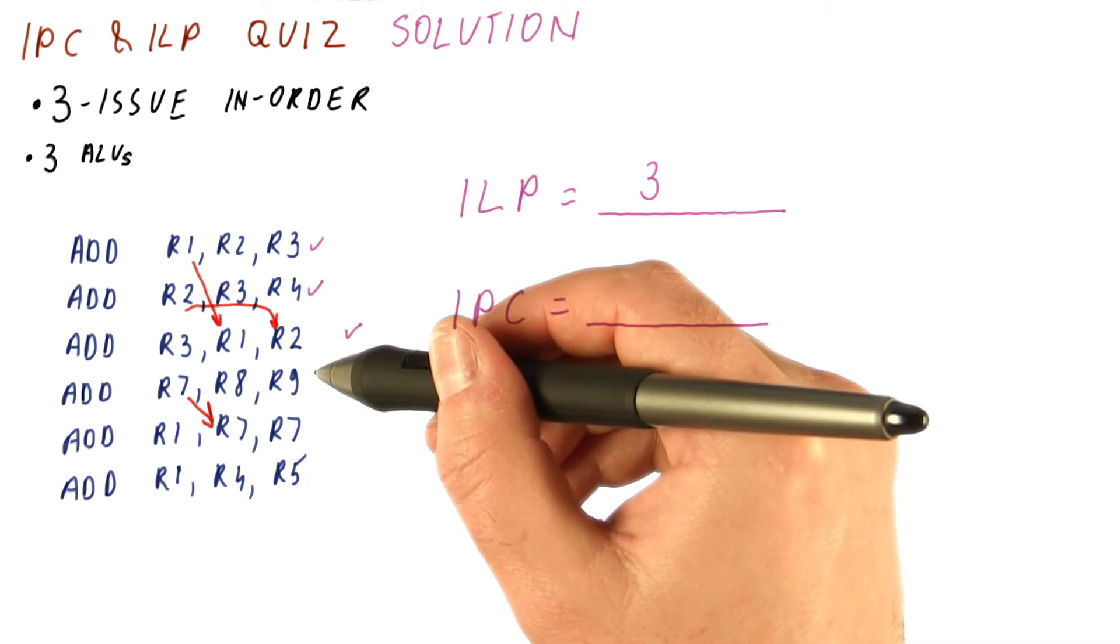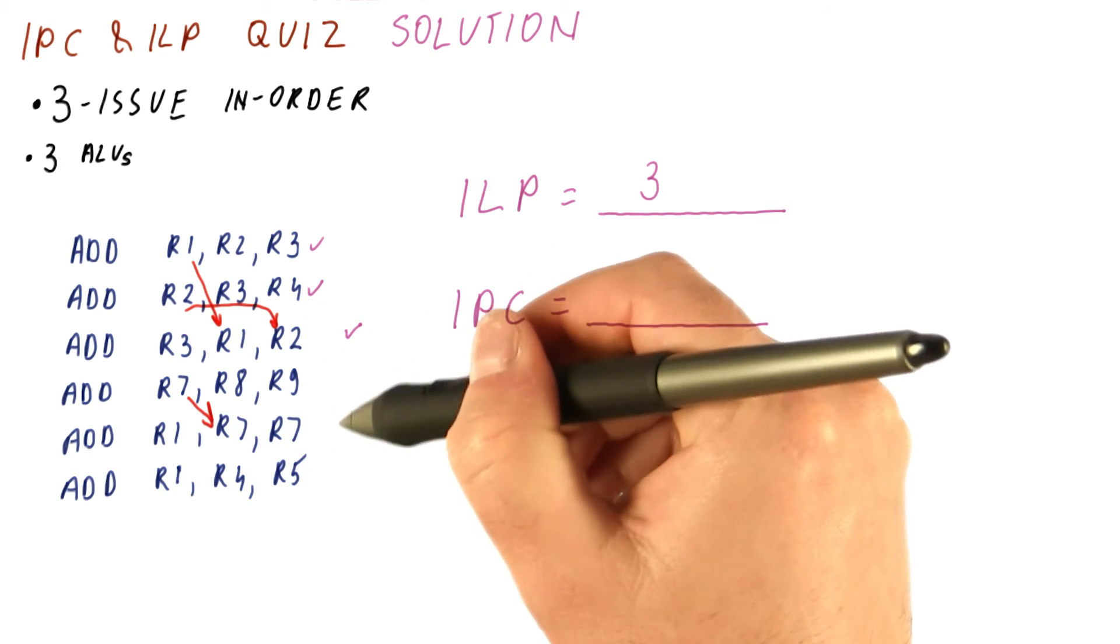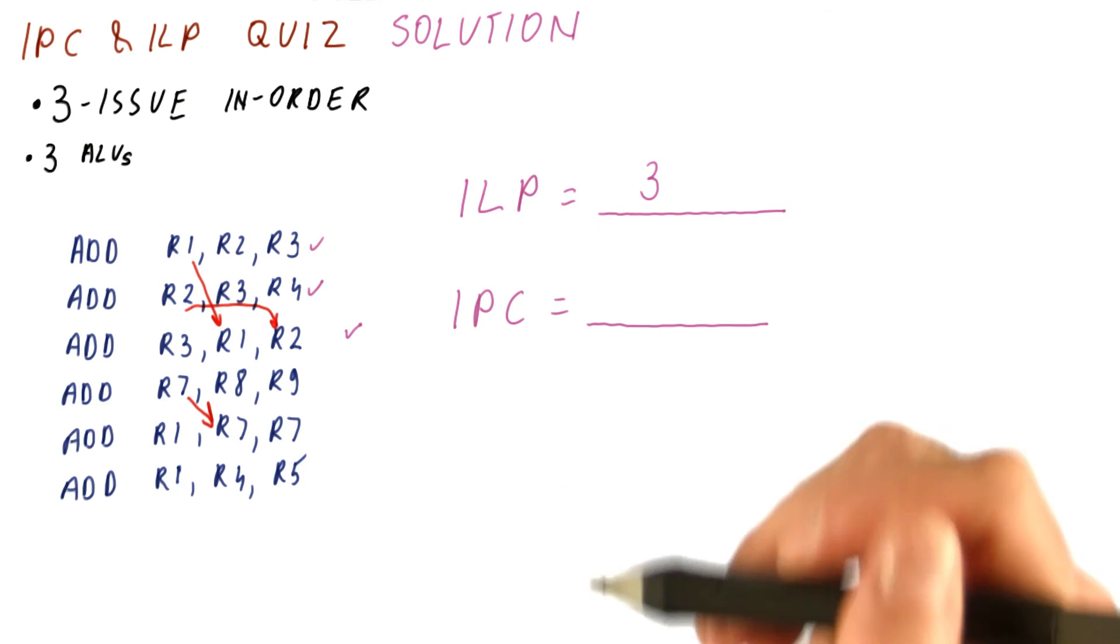And now the problem is that in an in-order processor, once we don't execute an instruction, we cannot execute instructions past it because that would be out of order. So this is all that happens in the first cycle in this processor.